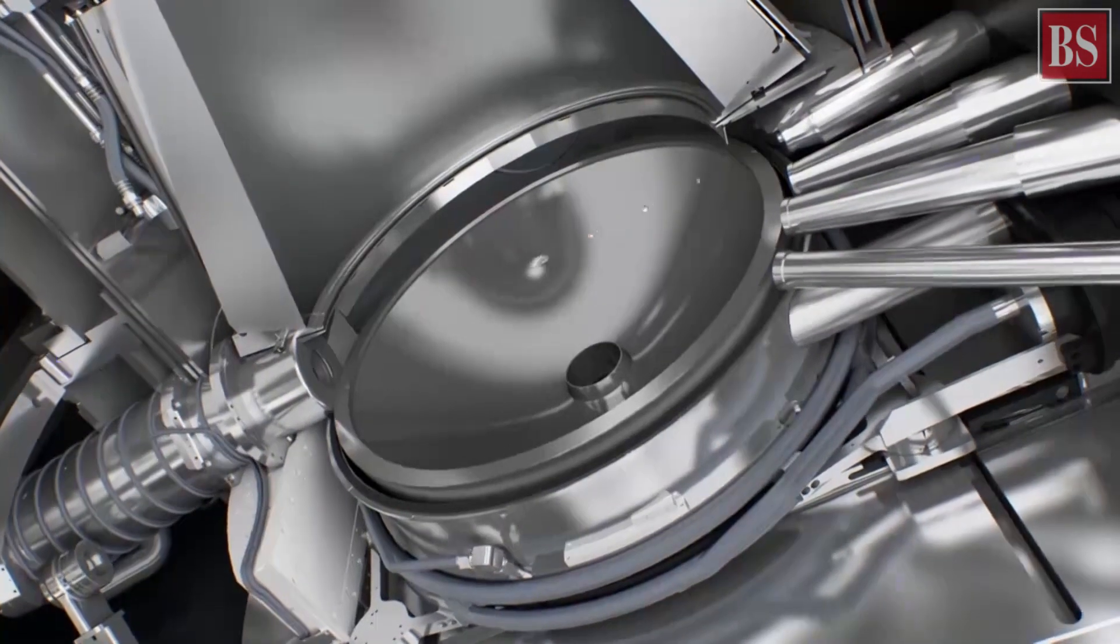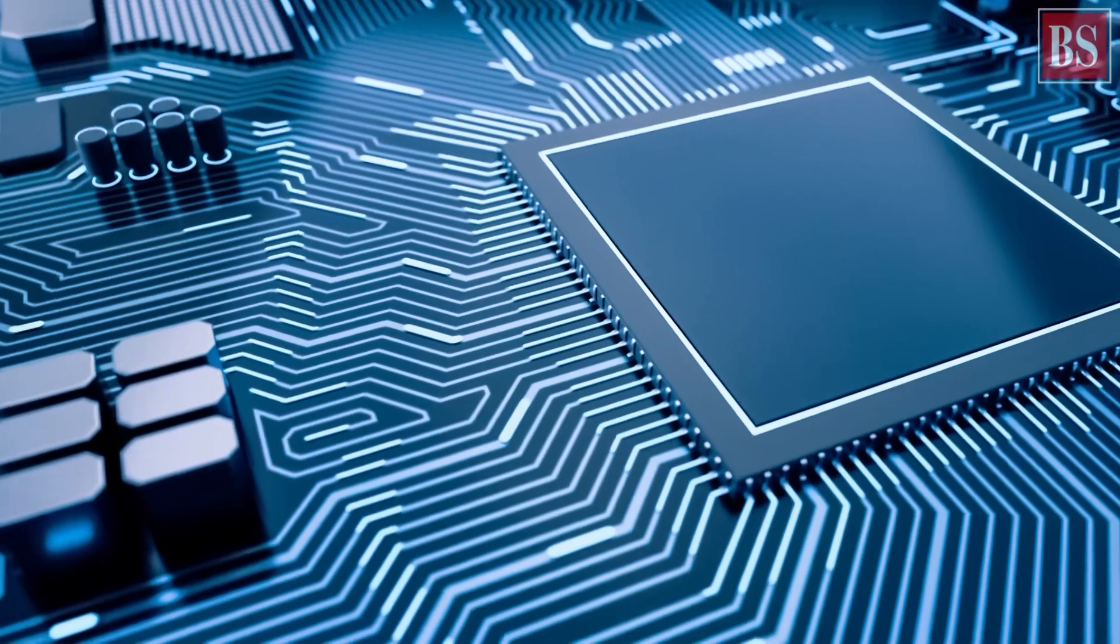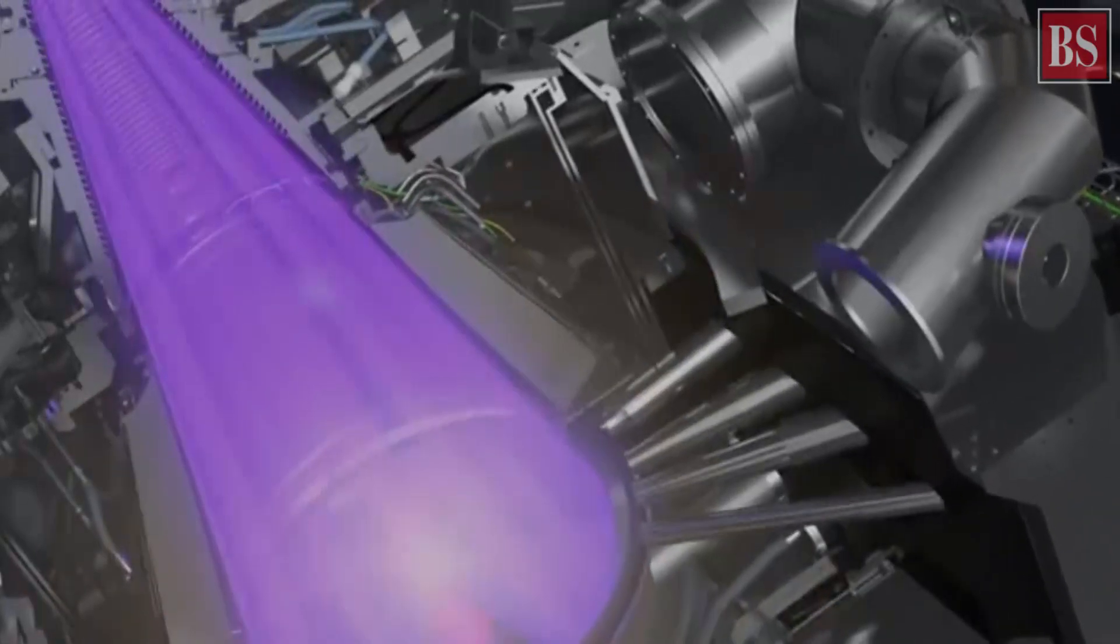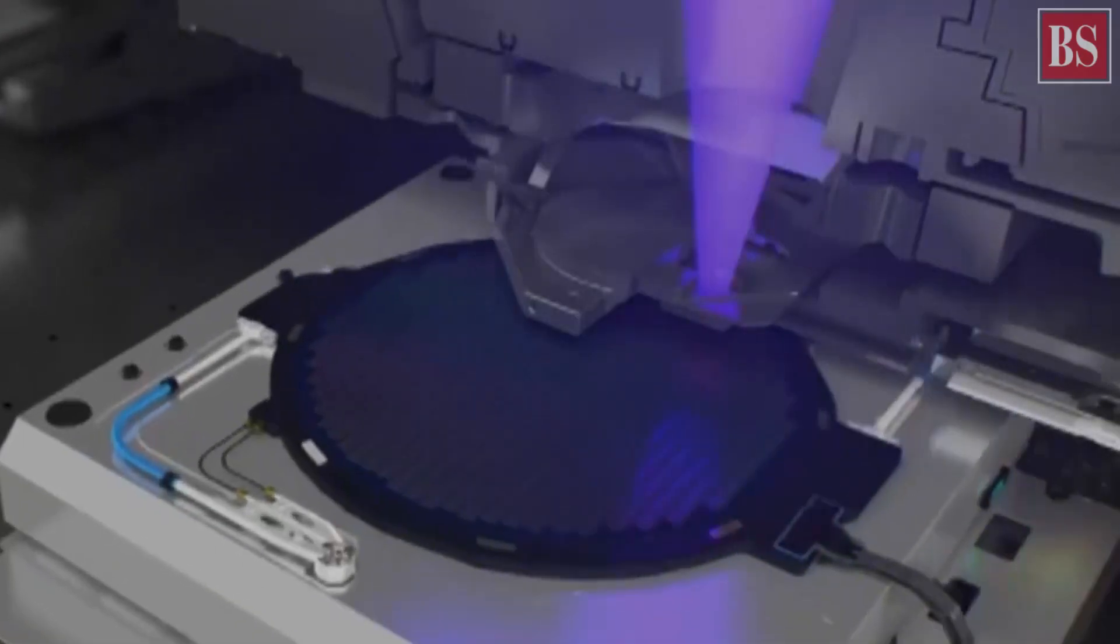ASML makes lithography systems used to create the circuitry of computer chips. Its lithography systems can be found in the factories of every major chip maker in the world.